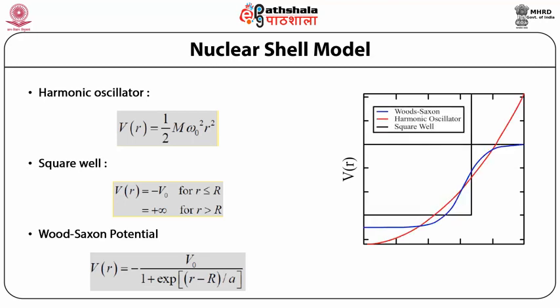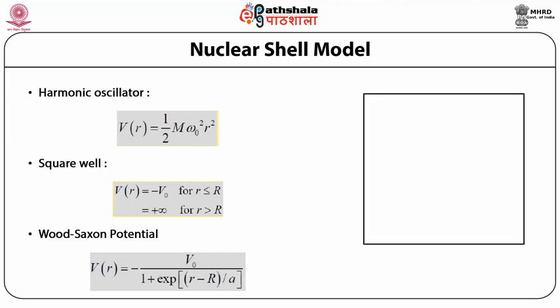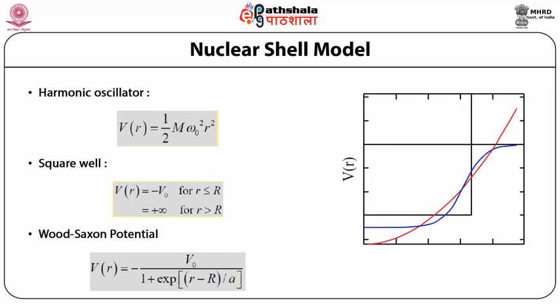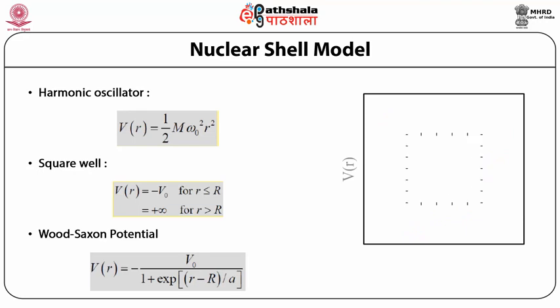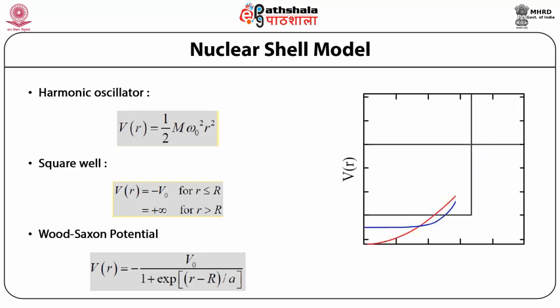They obtained a different kind of potential by fitting the observed nuclear densities for various nuclei, and fitted those nuclear densities with a function better called the Woods-Saxon potential. So the actual nuclear potential is neither harmonic oscillator type nor square well type, but is of the Woods-Saxon type. The three potentials are shown in the picture on the right-hand side.